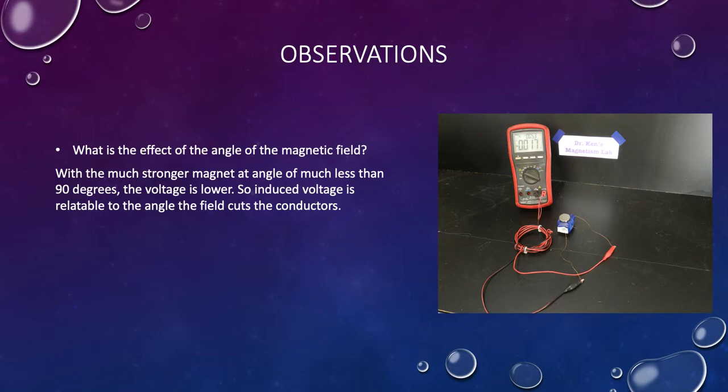Next, what is the effect of the angle of magnetic field? Remember we put the button magnet here on the outside and move the coil backwards and forwards under the button magnet. So with the much stronger magnet at an angle much less than 90 degrees, the voltage is lower. So induced voltage is relatable to the angle of the field and how it cuts the conductors - what we call the angle of incidence between the conductors and the magnetic field. Speed in relation also plays a significant role.